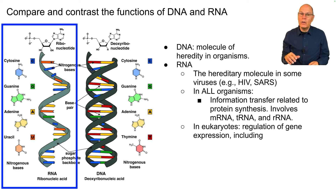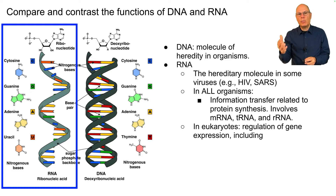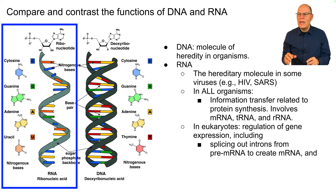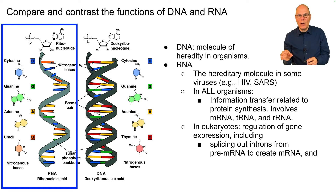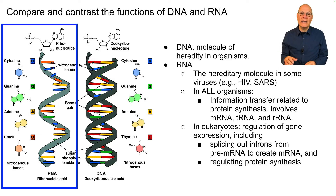In eukaryotes, RNA is also involved in the regulation of gene expression. This includes splicing out introns — non-coding DNA — from pre-mRNA to create mRNA, and regulating protein synthesis.